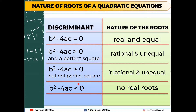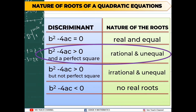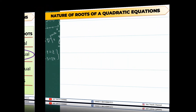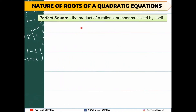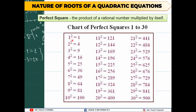So where does 144 fall in our table? Since it is a positive number, let's check if it is a perfect square. A perfect square is the product of a rational number multiplied by itself. Here is an example chart of perfect squares from 1 to 30 — numbers like 1, 4, 9, 16, 25, 121, and so on. These are what we call perfect squares.